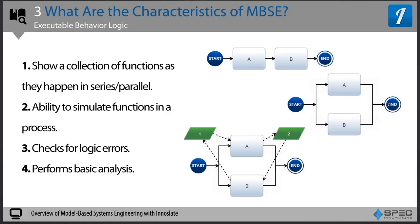A key characteristic of MBSE is executable behavior logic, which shows a collection of functions happening in series or parallel, giving you the ability to simulate those functions as they progress. This performs basic error checking and supports analysis. For example, you can see functions A and B happening sequentially, or in parallel. In one model, A and B are in parallel but there's an error in the logic because A is waiting for something from B, and B is waiting for something from A — so neither one can start.